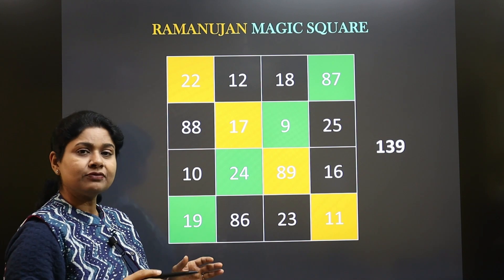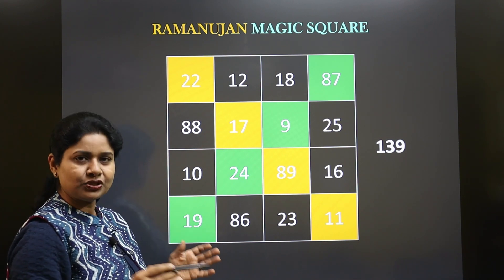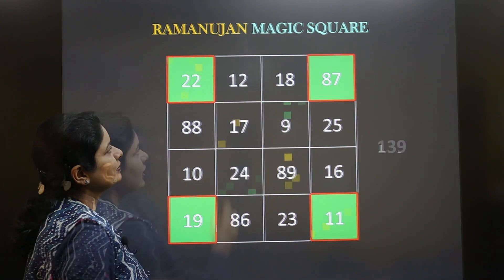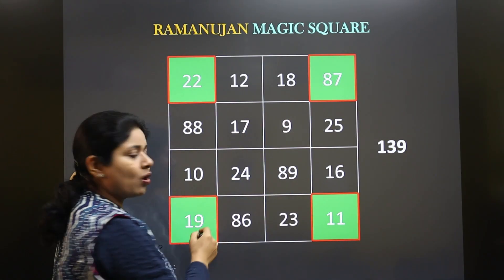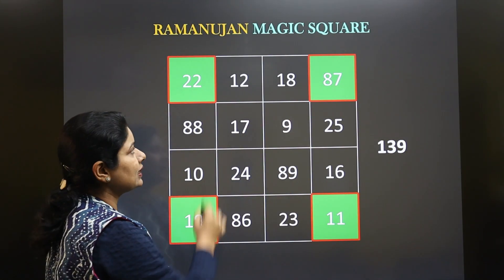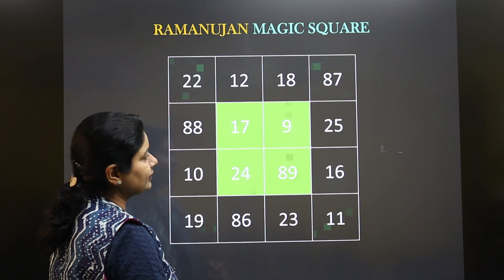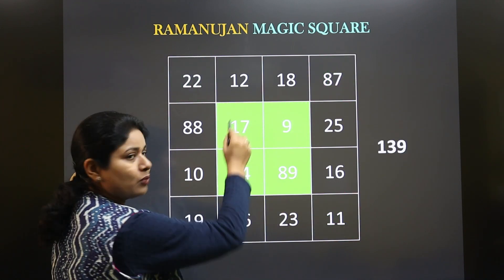Now I am going to share with you many interesting patterns which you can see in this magic square. If you add these four corner squares — the numbers given in them — that also adds up to 139, or if you see this block, that also totals to 139.